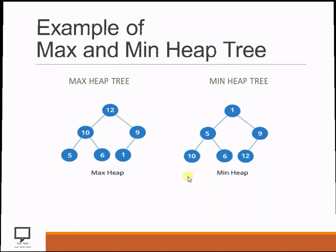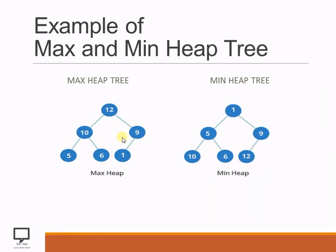Now we will see some examples where I am going to explain the max heap tree as well as the min heap tree. Here you can see there are one, two, and three parent nodes. If we consider 12 as a parent node, its children — 10 and 9 — are having less value than the parent node, meaning the parent is greater. If we consider 10 as a parent node, it is greater than its children 5 and 6.